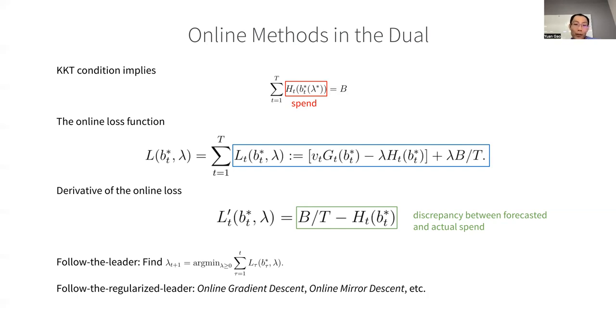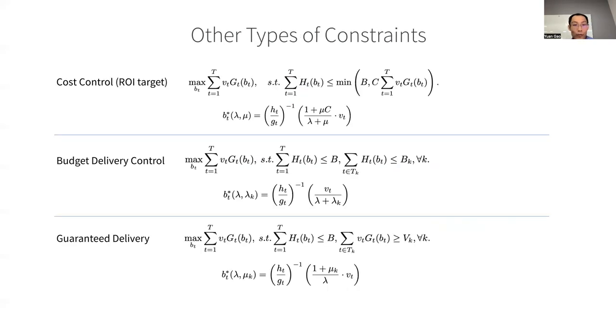There are some practical learnings in implementing such an online optimization system, but before diving into that, I'd like to highlight the benefit of the general framework we proposed. So first of all, it's straightforward to introduce other types of constraints, in addition to the budget constraint. For instance, we can introduce some sort of cost control by adding an ROI.